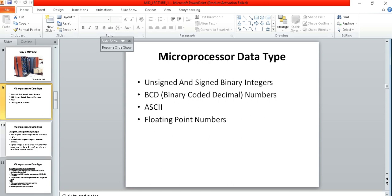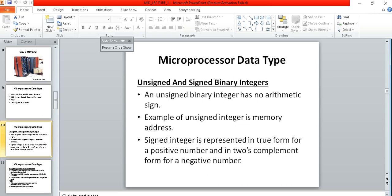An unsigned binary integer has no arithmetic sign. An example of unsigned binary integers is memory address. Signed integer is represented in true form for a positive number.